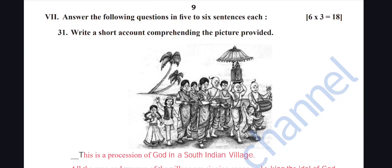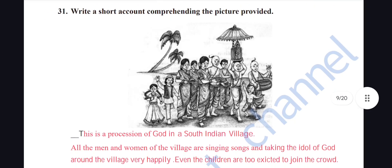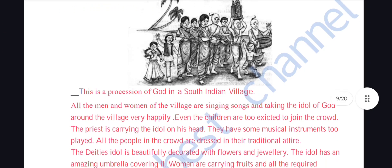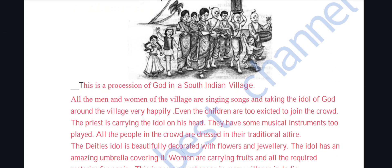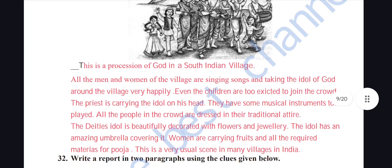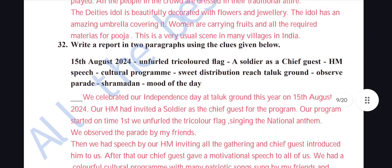Three-mark questions: Write a short account based on the picture — it shows a procession of God in a South Indian village. All the men and women are singing songs and taking the idol around the village. Children are excited to join the crowd. The priest carries the idol on his head. Musical instruments are being played. People are in traditional attire, the deity's idol is beautifully decorated with flowers and jewelry, and women are carrying fruits and puja materials.